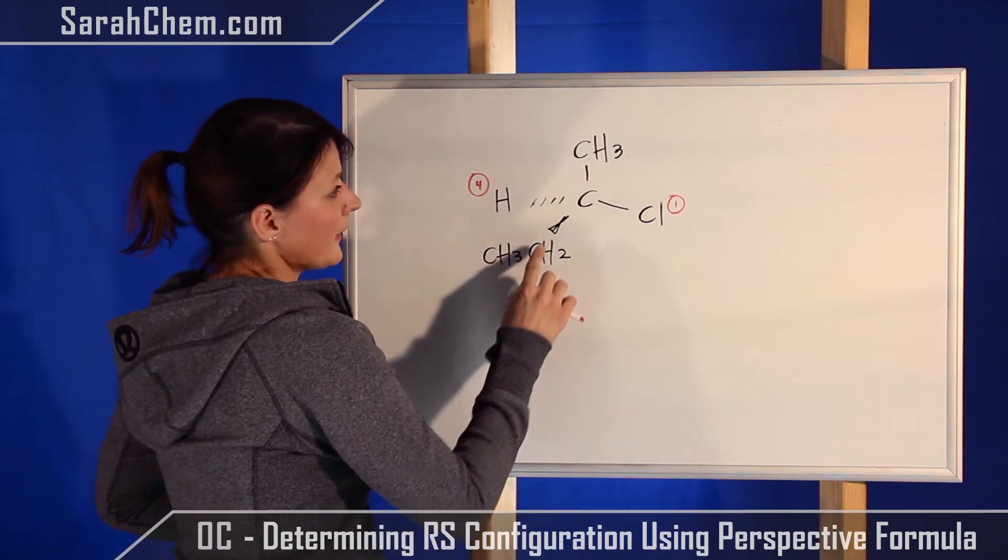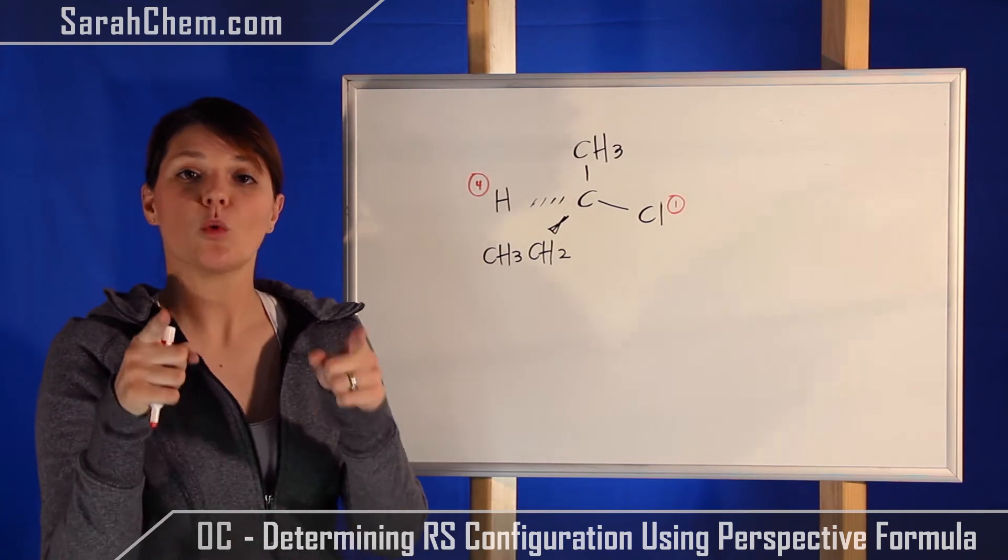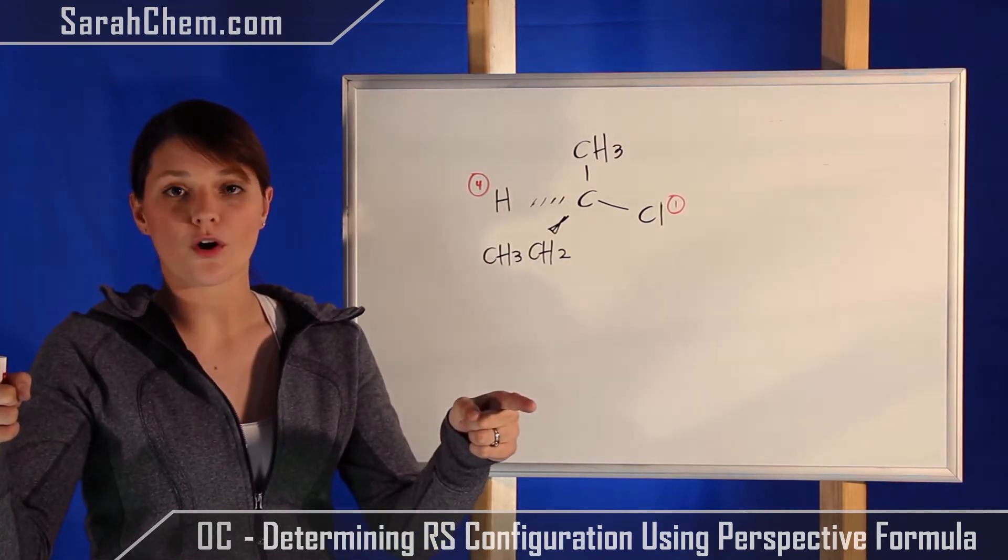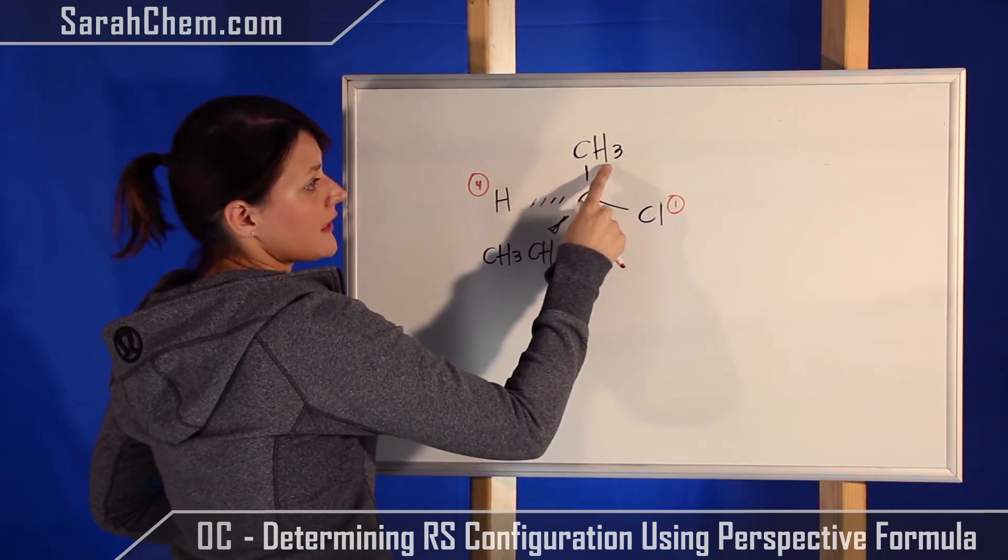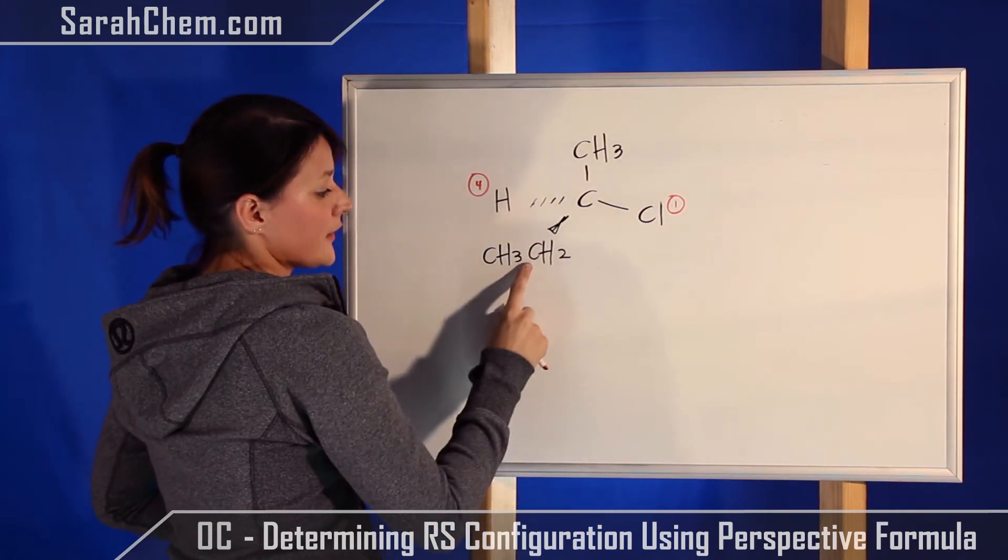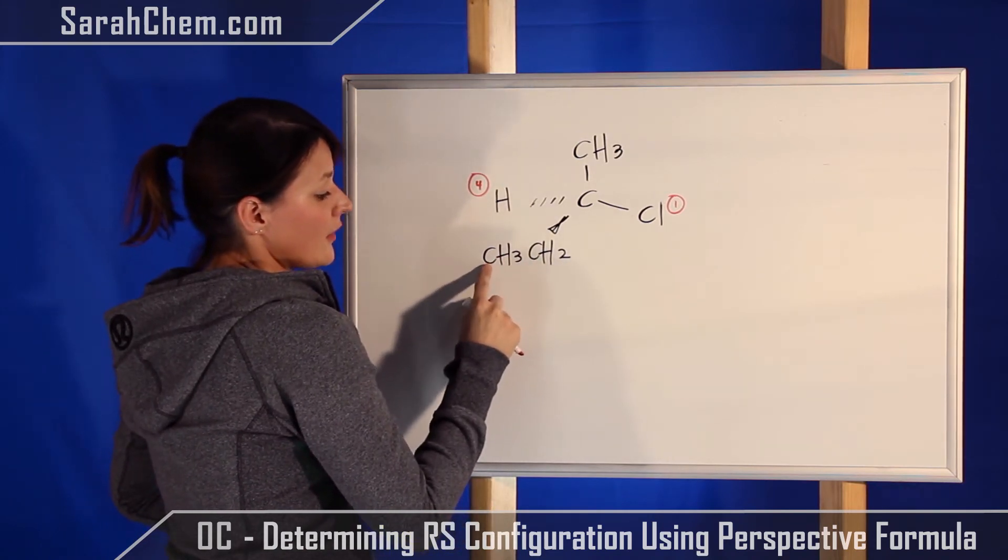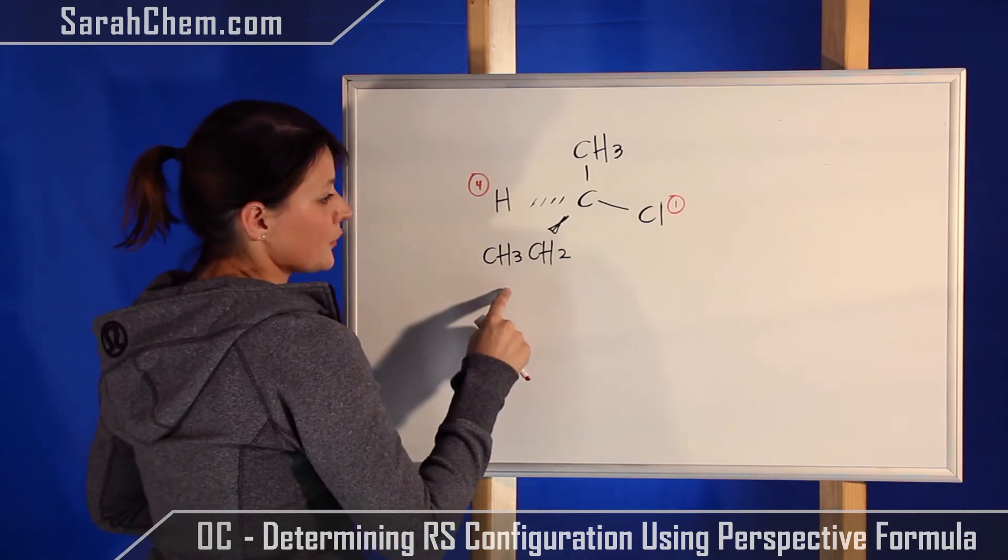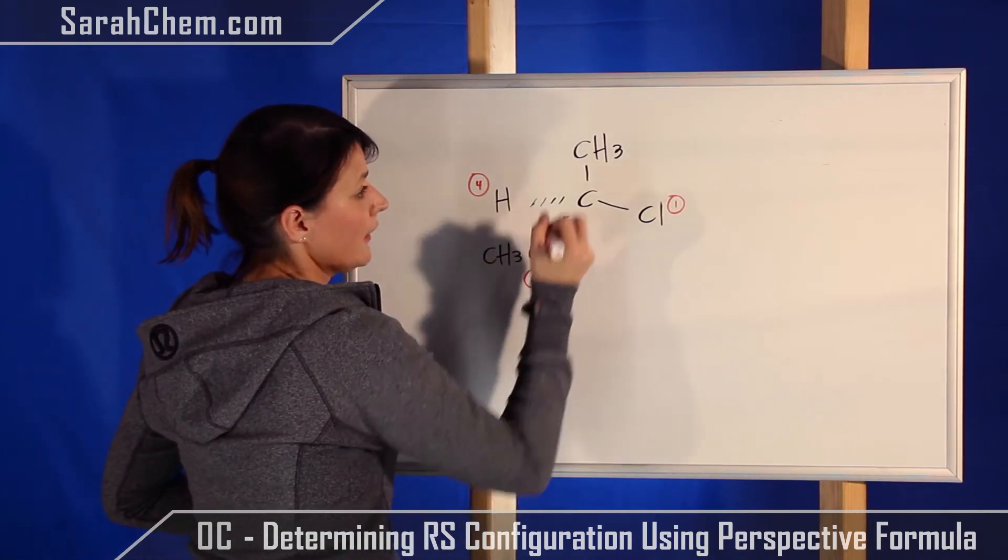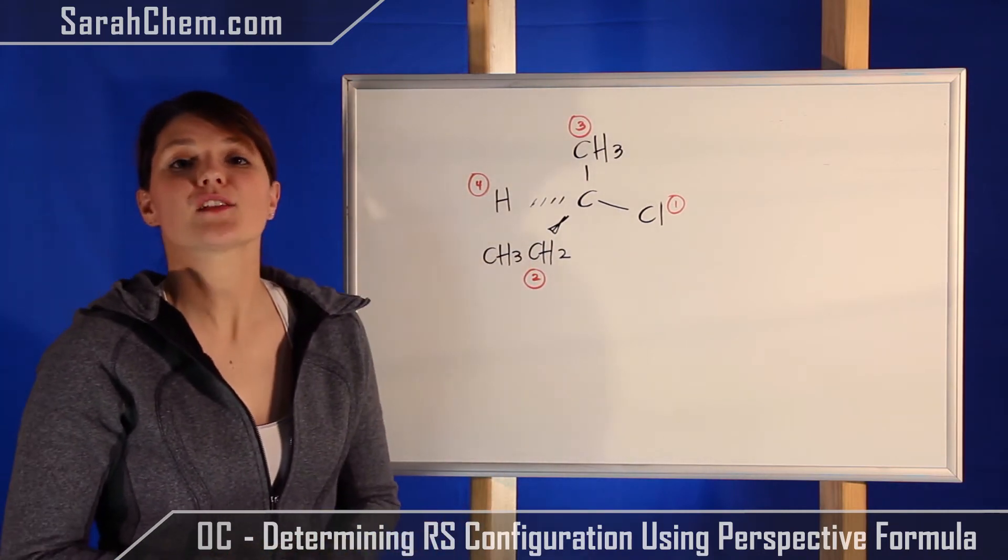Now I'm dealing with carbon compared to carbon. When you have exactly the same atom attached, what you want to do is go out one more and see what it is attached to. For example, this carbon is attached to three hydrogens, whereas this carbon is attached to two hydrogens and one other carbon. This carbon outranks the hydrogens that I have here, meaning that this group here would have a higher priority and this would have the lower priority. So now I've prioritized all of my groups.